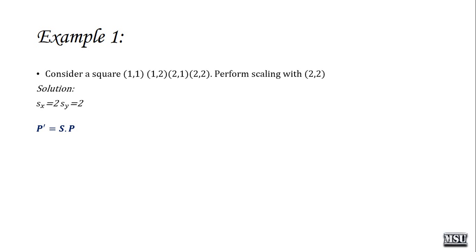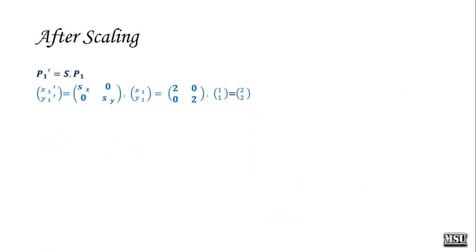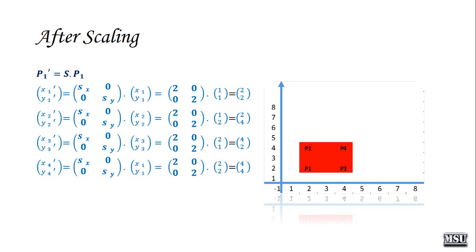We know the formula P dash equals S into P. Applying the values: X1, Y1 is 1 comma 1, giving scaled value 2 comma 2. X2, Y2 is 1 comma 2, giving 2 comma 4. X3, Y3 is 2 comma 1, giving 4 comma 2. X4, Y4 is 2 comma 2, giving 4 comma 4. So the scaled points P1 dash, P2 dash, P3 dash, and P4 dash show that the size of the square is increased.